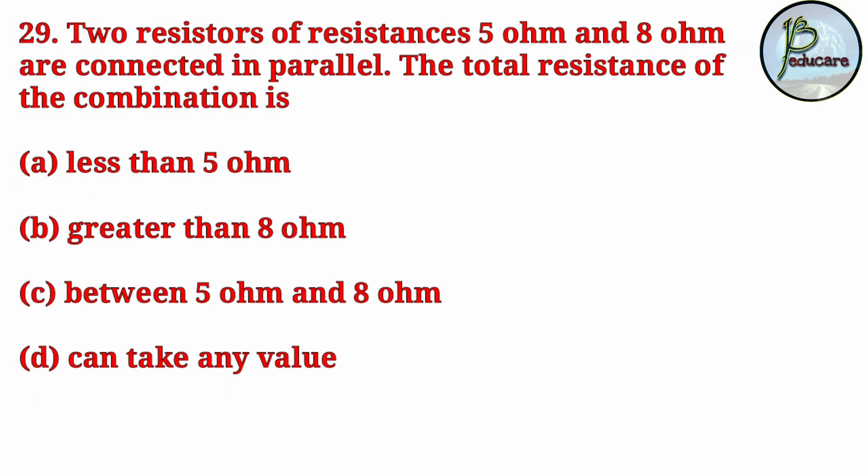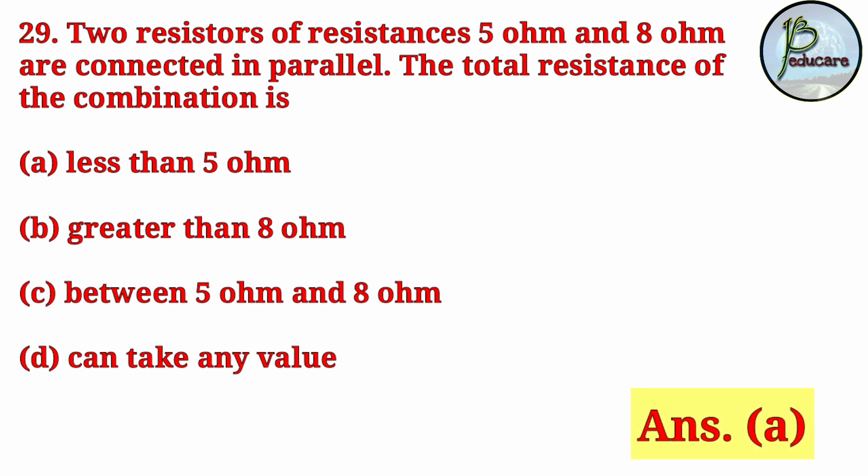Next question: Two resistors of resistances 5 ohm and 2 ohm are connected in parallel. What is the total resistance of the combination? In a parallel connection, total resistance is lower than the smallest individual resistance. The correct option is answer A, less than 5 ohm.